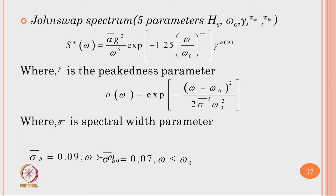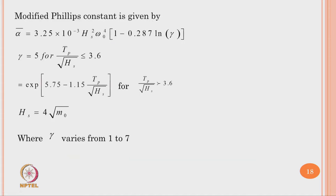We also have the JONSWAP spectrum, which is a 5-parameter spectrum with h_s, ω₀, γ, τ_a, and τ_b, where ν is the peakedness parameter and σ̄ is the spectral width parameter. The Phillips constant is subsequently modified, and ν is also modified for a given value, with variation from 1 to 7. With the help of all these spectra, one can know the forces coming on offshore members.